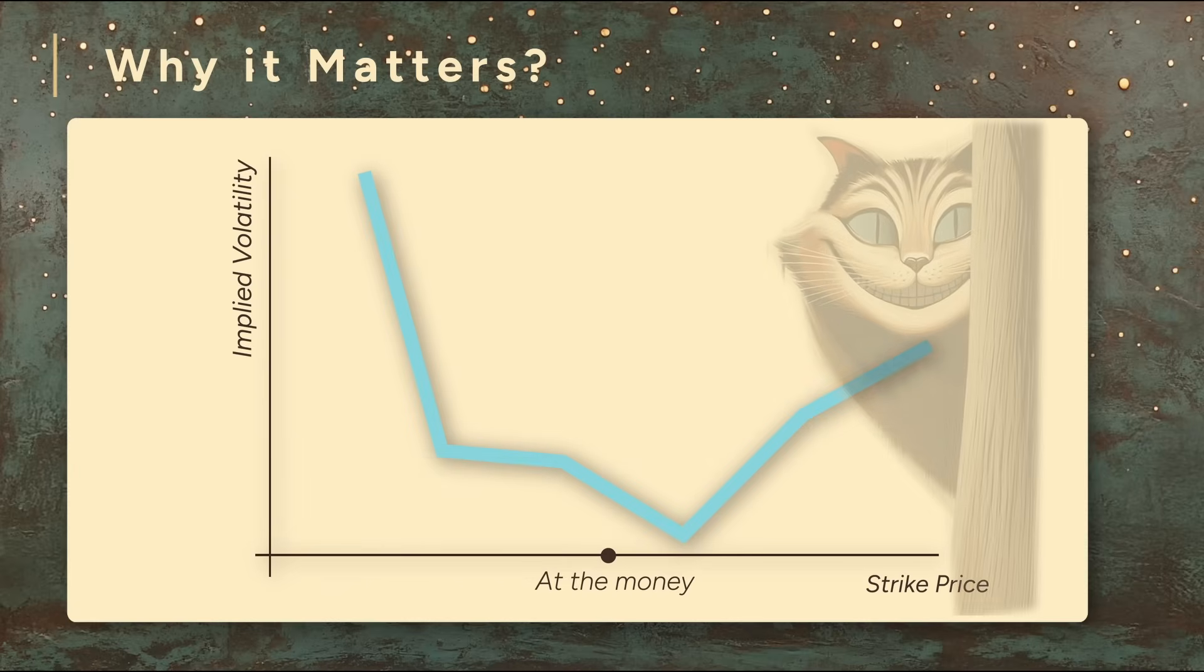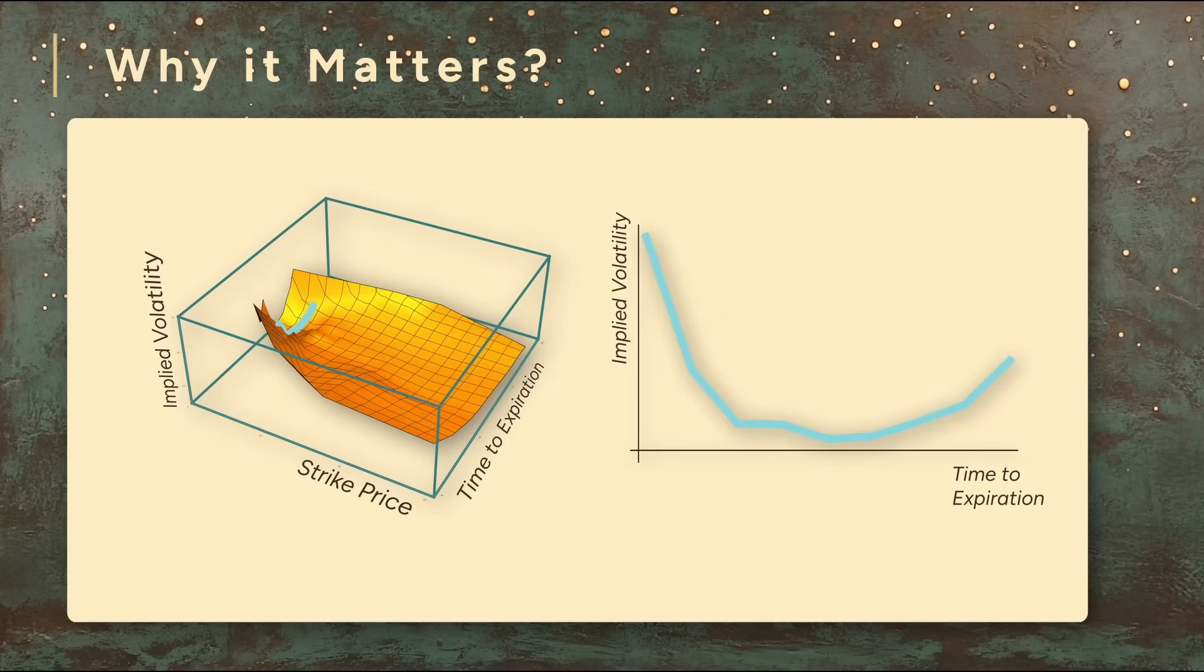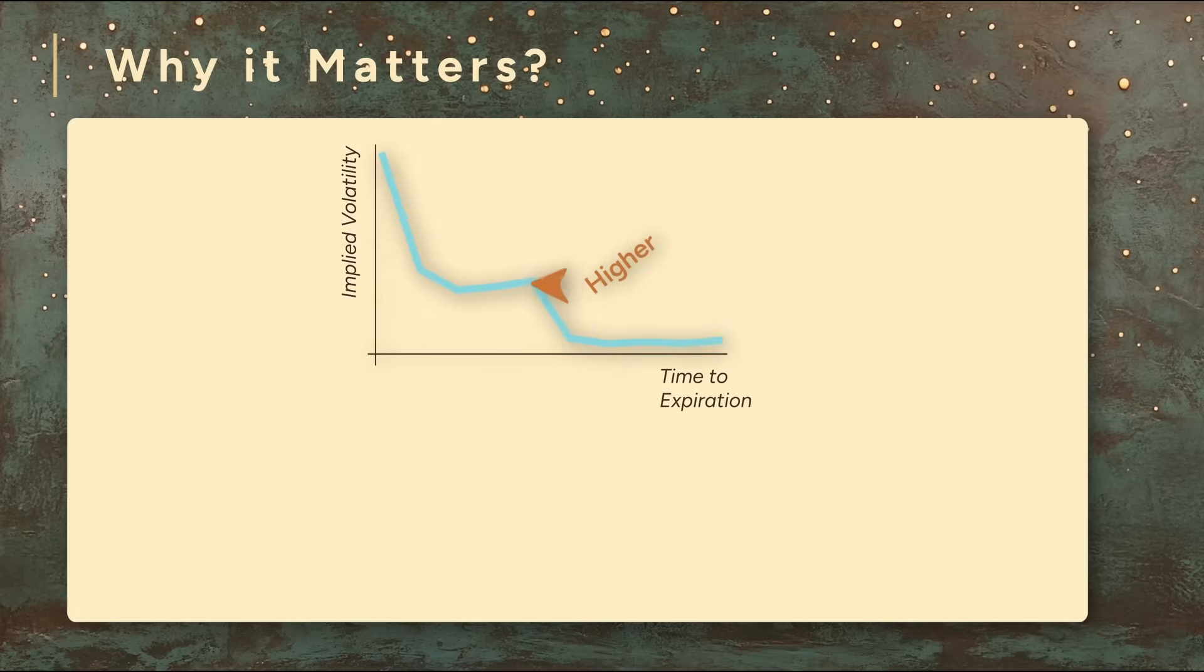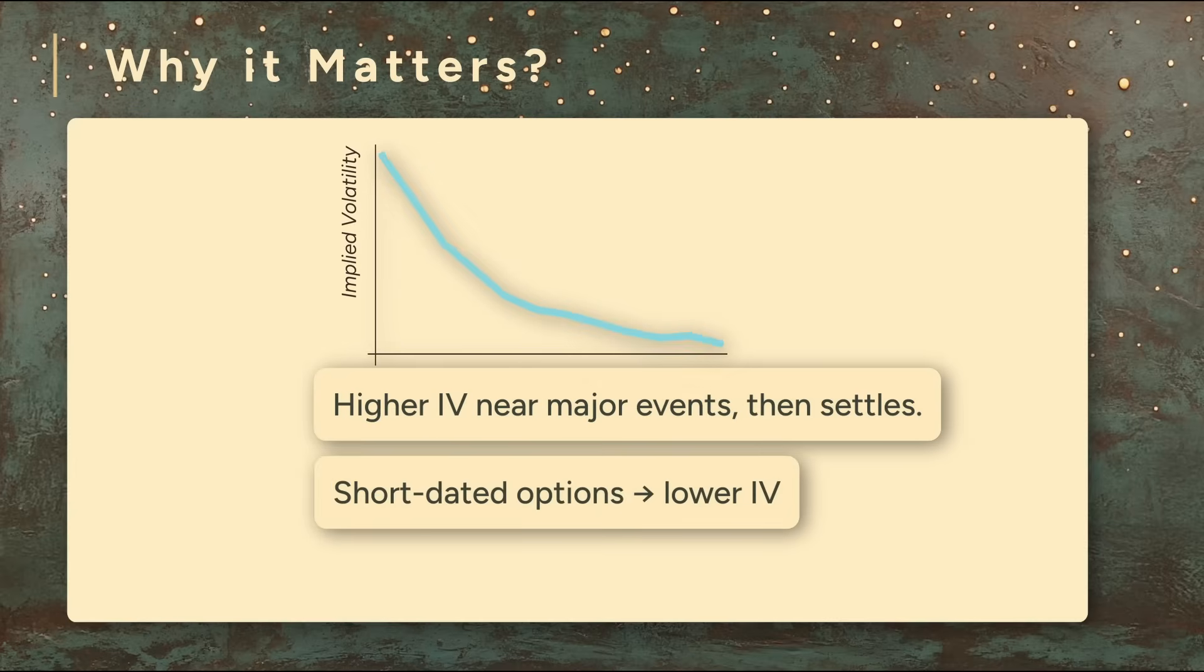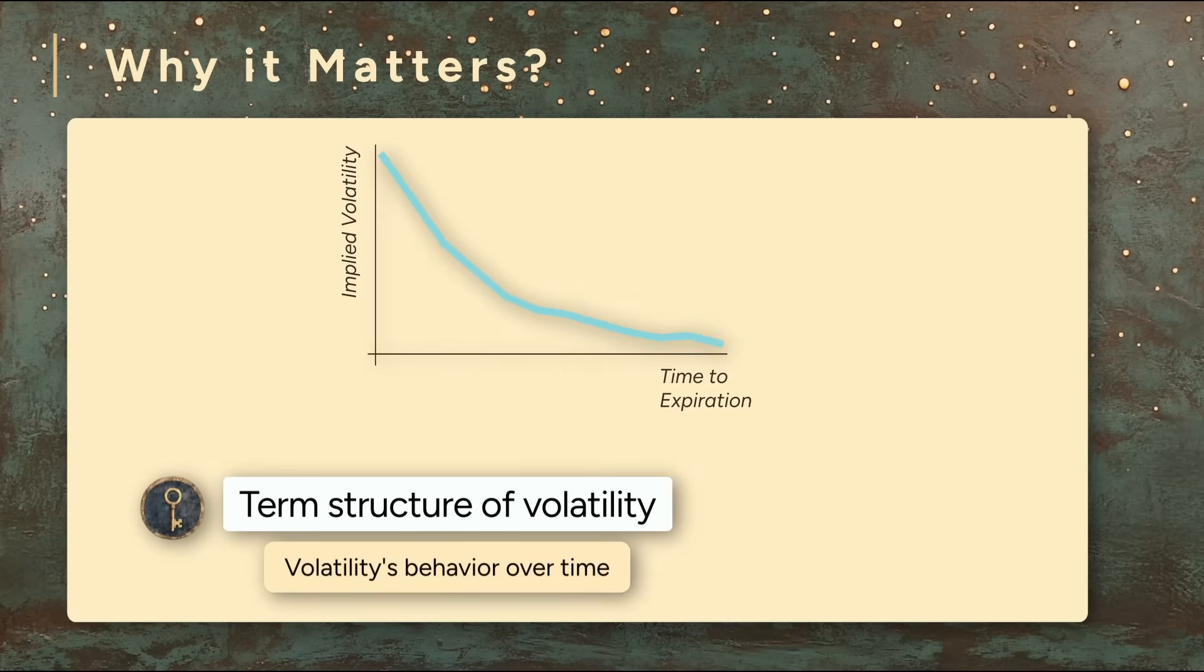In equity markets, it often tilts to one side, creating more of a skew or a smirk. Now for the time dimension. Across expirations, implied volatility also changes. For example, implied volatilities might be a bit higher for options expiring right around a major event and then settle down afterward. Short-dated options might have low implied volatility, while longer-dated options can be higher. The behavior over time is called the term structure of volatility.